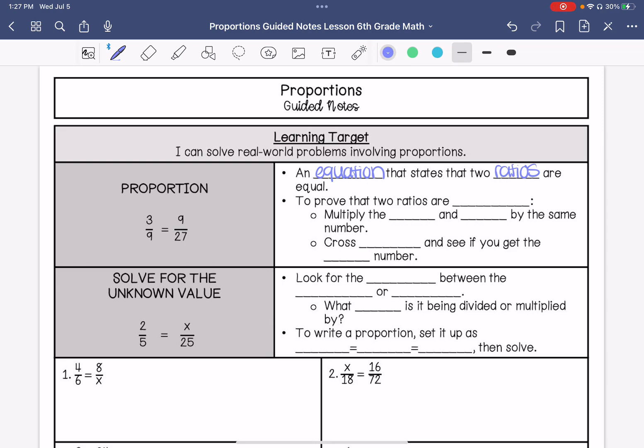To prove that the ratios are equivalent, you can do two different things. You can multiply the top and bottom by the same number and see if you get that number. Or you can cross-multiply and see if you get the same number.